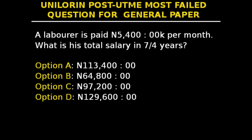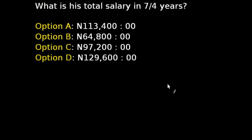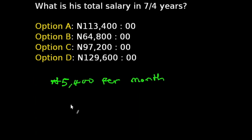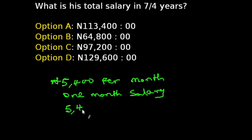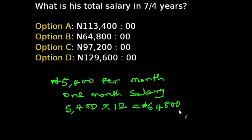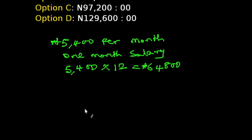Hello, this is question 37 in our series. A laborer is paid 5,400 Naira per month. What is his total salary in 7/4 years? He is paid 5,400 Naira per month, so his annual salary is 5,400 times 12 months, which gives 64,800 Naira. To get his salary for 7/4 years, we multiply 64,800 Naira by 7/4.